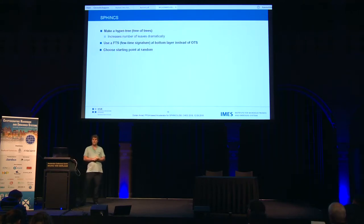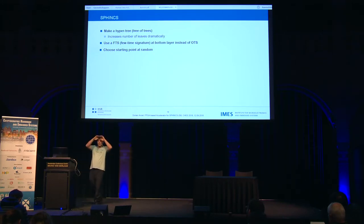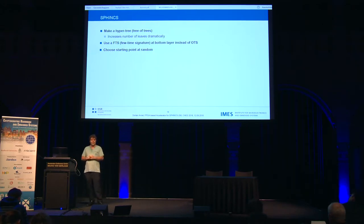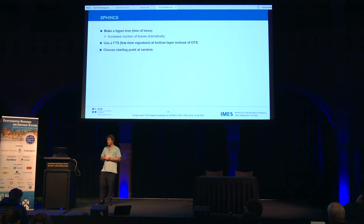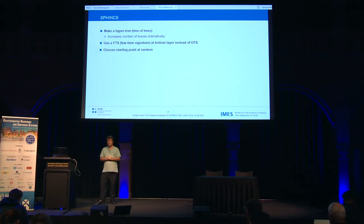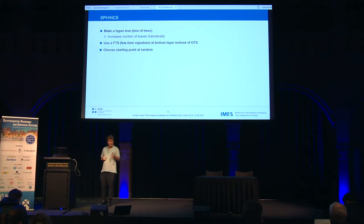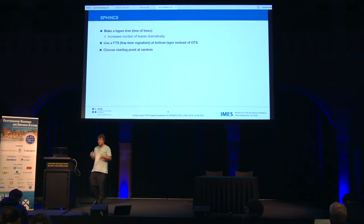This is where SPHINCS came in — a group around Andreas Hülsing published it in 2015. The basic idea is to make the Merkle tree very big so that we can choose a random starting point, and then we don't have to maintain that list. A big tree needs a lot of computation to calculate the public key since we have to calculate the whole tree. So the second idea is to break the whole tree into small subtrees, where every subtree signs the previous public key, building a huge tree with less processing power. Third, at the very lowest level where we sign our message, they add a security margin so that if we randomly take the same node twice, it's not broken yet.